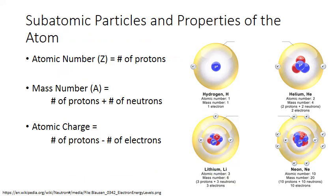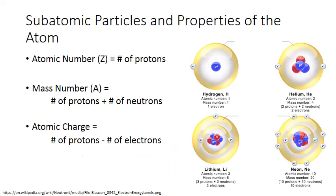Finally, the balance between the number of positively charged protons and negatively charged electrons gives us the net atomic charge. In a neutral atom with a net charge of zero, the number of protons equals the number of electrons. For hydrogen, one proton and one electron balance each other out, giving a net charge of zero. For helium, two protons and two electrons — two minus two gives a net charge of zero. The same applies for lithium and neon: equal numbers of protons and electrons result in a net charge of zero.